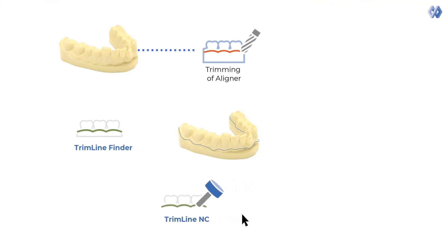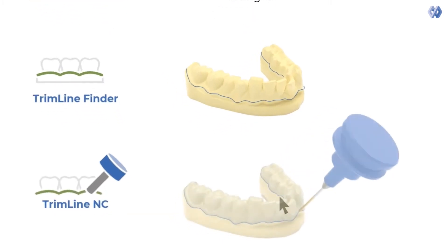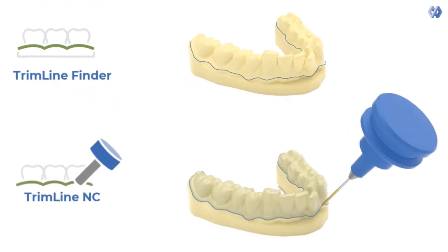ModuleWorks Trimline NC eliminates another laborious manual process. It helps automate the process of trimming the aligner itself, using either a CNC machine or a robotic arm.